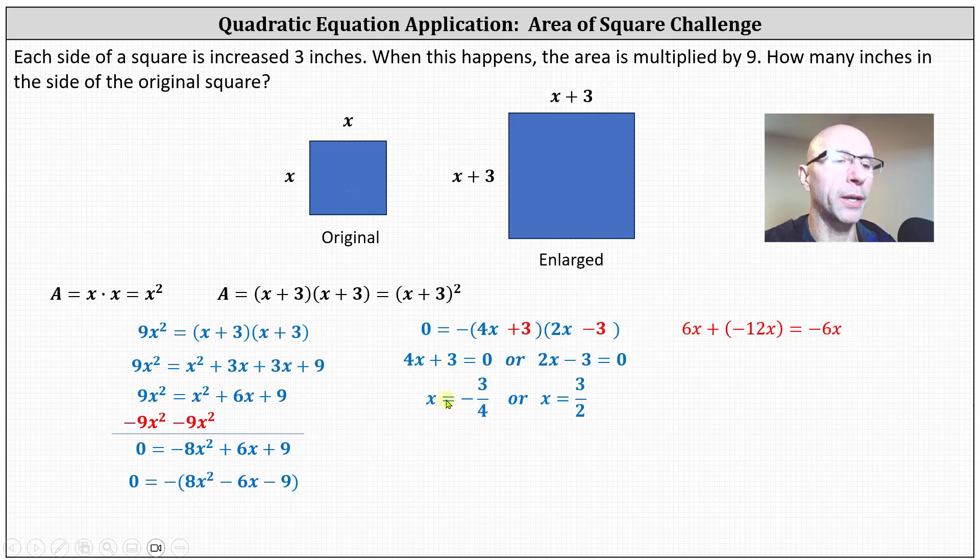Now remember here, x is a length, so we can go ahead and discard x equals negative three fourths. That's not a possible solution. And again, the question is, how many inches is the side of the original square? Each side of the original square is three halves inches, or 1.5 inches. I hope you found this helpful.